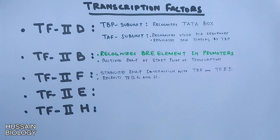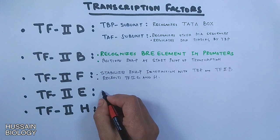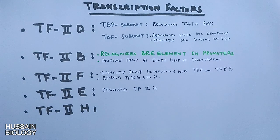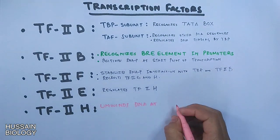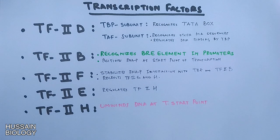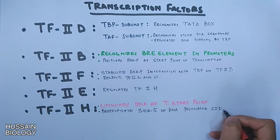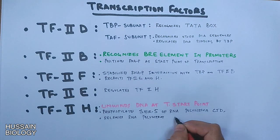Then we have transcription factor 2E which regulates transcription factor 2H. And finally this transcription factor 2H unwinds DNA at transcription start points, phosphorylates the serine of RNA polymerase CTD, and also releases RNA polymerase from promoter.